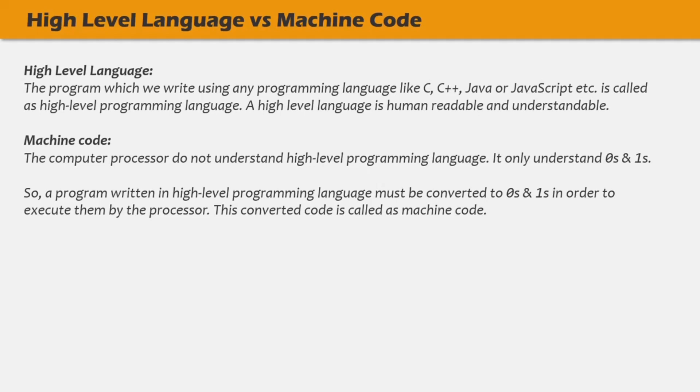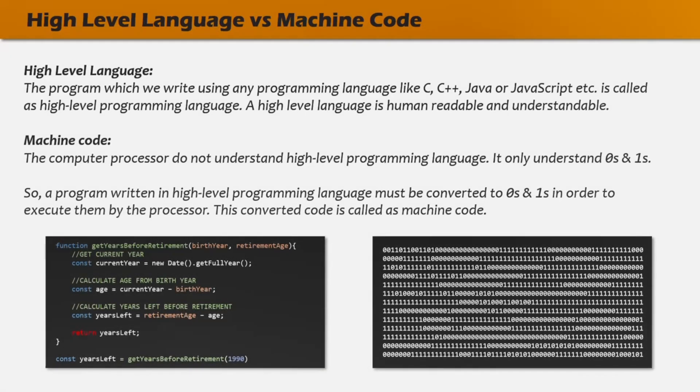A computer processor only understands machine code. It does not understand high-level programming language like C or JavaScript. And we as humans cannot write programs in machine code by ourselves. If we look at high-level programming language and machine code side by side, on the left-hand side you have a program written in JavaScript, and when this JavaScript program gets converted to machine code, it looks like the image on the right-hand side — basically 0s and 1s. That's why we use high-level languages like C++, JavaScript, C-Sharp, etc. to write our programs, and then convert them to machine code using some tool in order to execute.